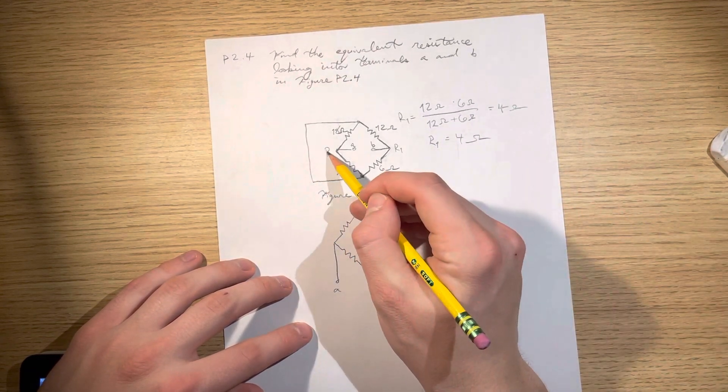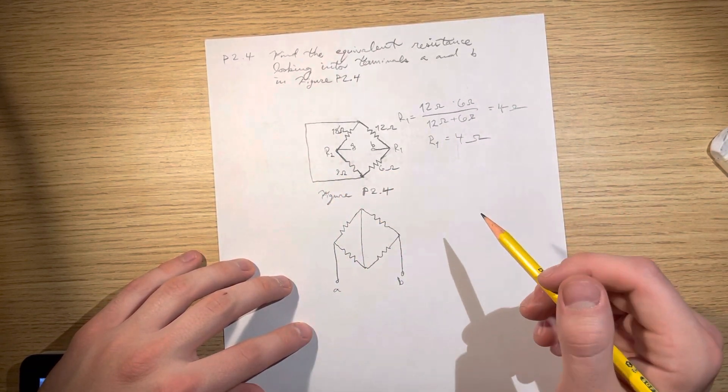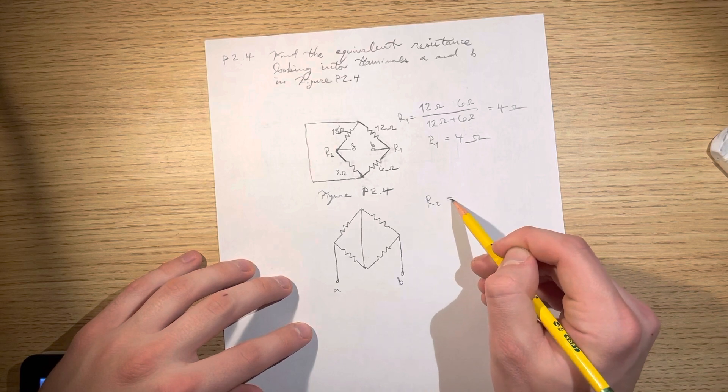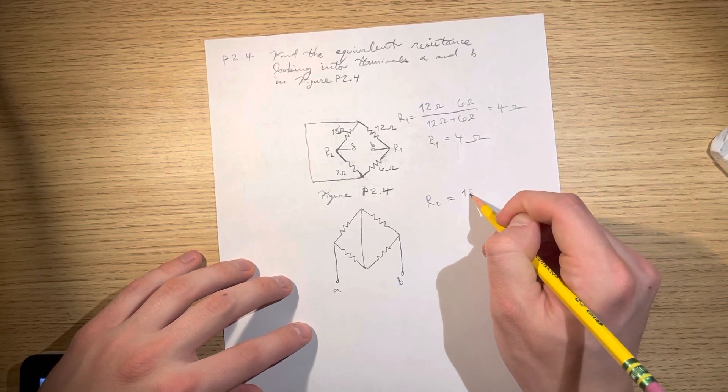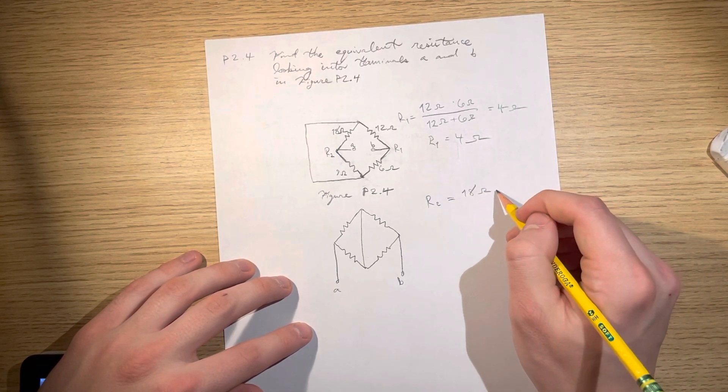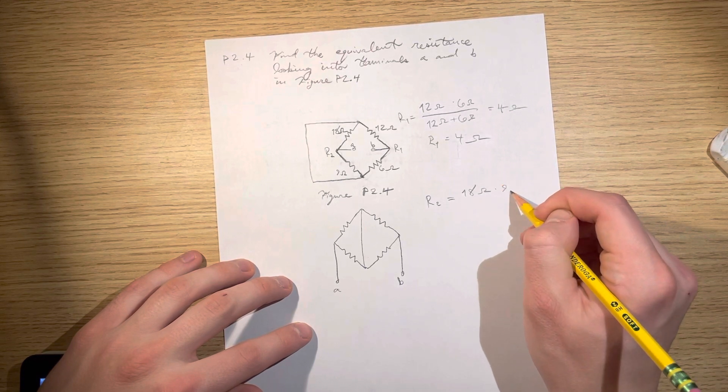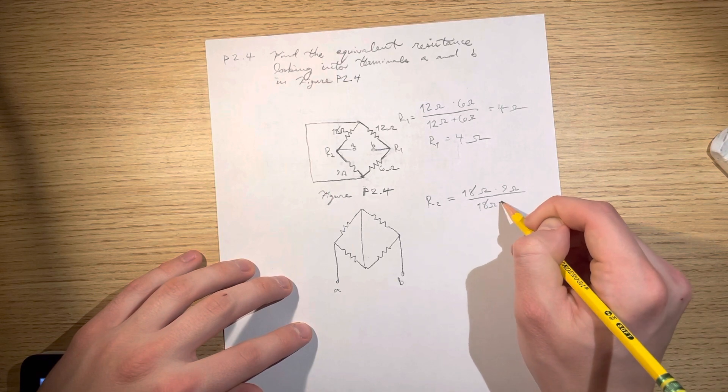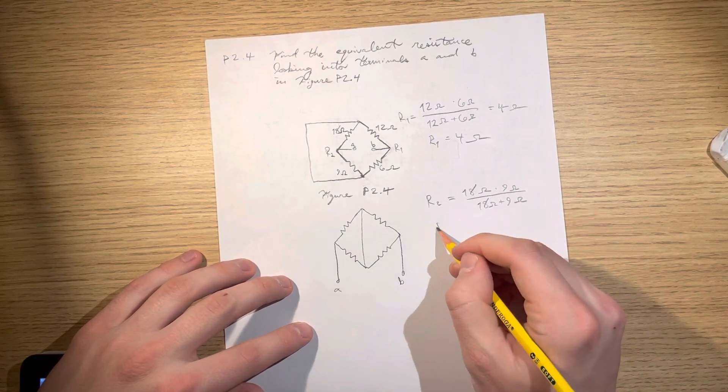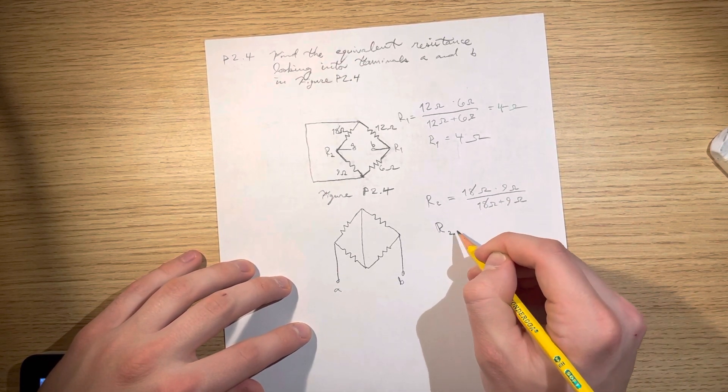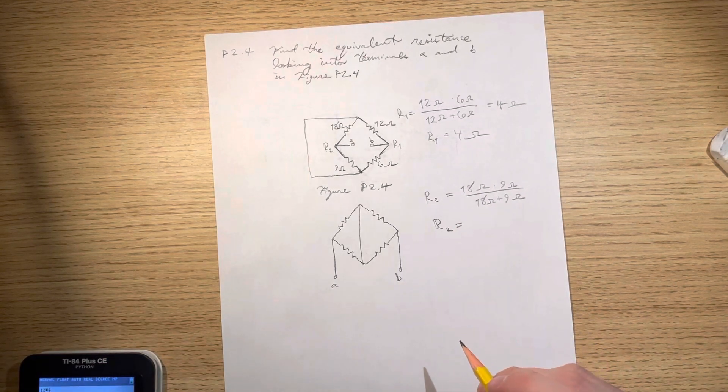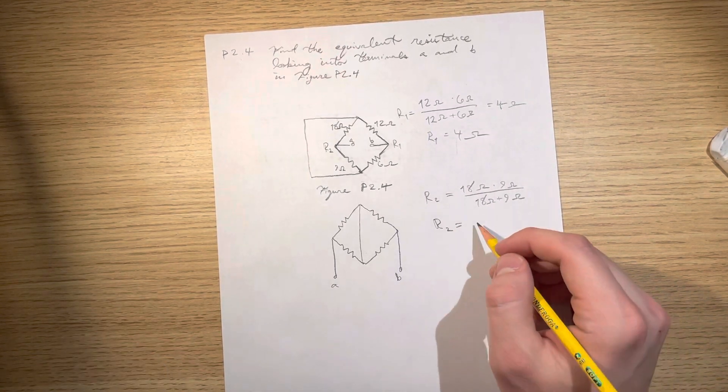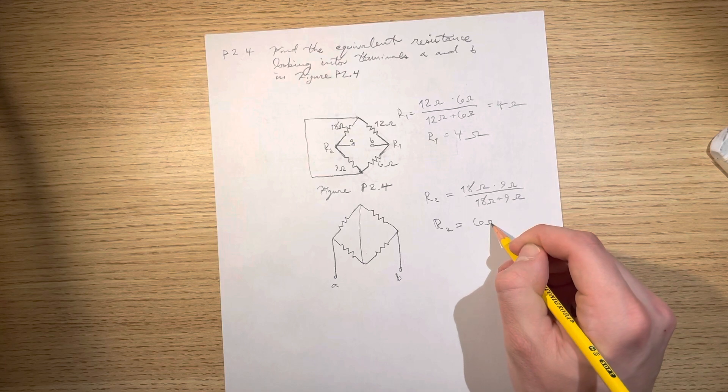And then, right here we have R2. R2 is the exact same thing in parallel. So, we're going to multiply 18 by 9 and then add them together. R2 is equal to 6 ohms.